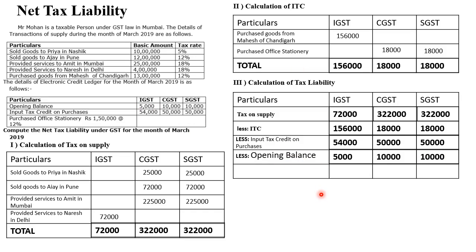Subtracting, we get either excess credit or tax liability. For IGST: 72,000 minus 1,56,000 minus 54,000 minus 5,000 gives negative 1,43,000 — that is excess credit. For CGST and SGST: positive 2,44,000 each — that is tax liability. Wherever the amount is negative it means excess credit; wherever positive it is tax liability.